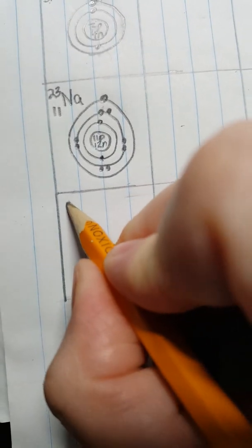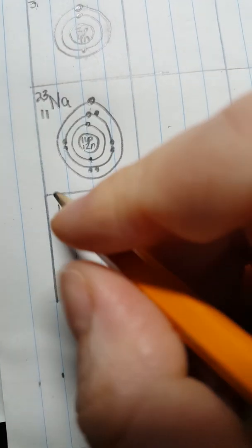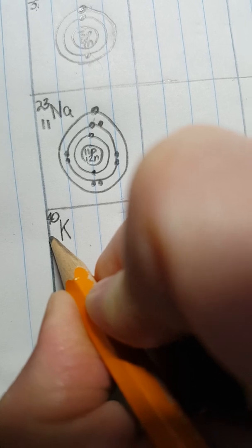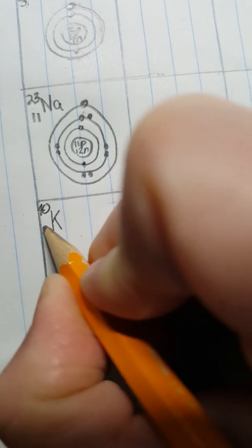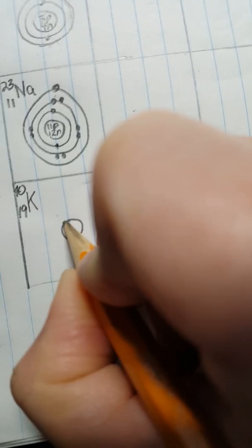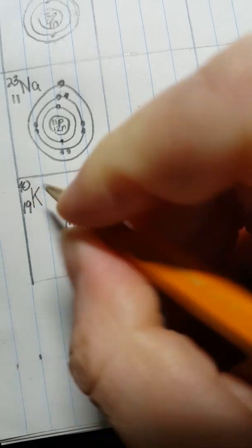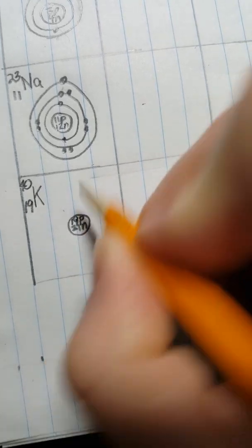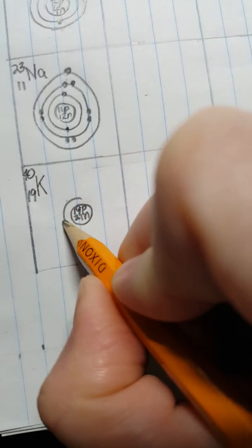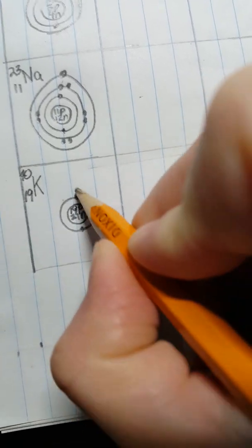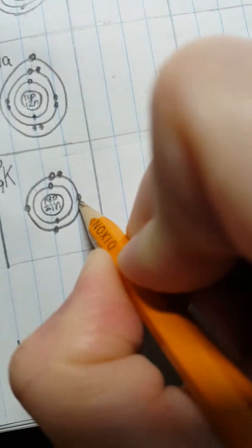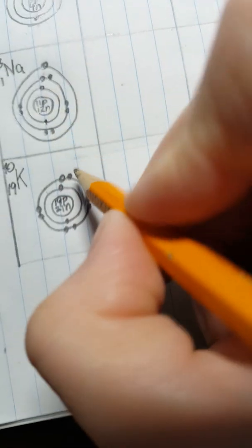Last but not least, under Sodium we have Potassium. 40 and where are we here, 19. Draw my nucleus. I have 19 protons. 40 take away 19, that gives me 21 neutrons. So now I can start to draw the electrons. I need to draw a total of 19 electrons. Okay, so now I'm up to 10,